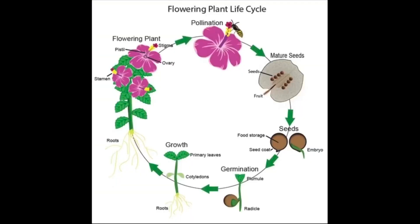All of this is happening around us in spring, summer, and early autumn. The potential for new life is being created as flowering plants are pollinated and seeds are dispersed. Across the world, the life cycle of flowering plants is renewed, or happens again, each year.